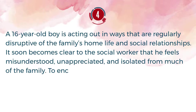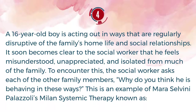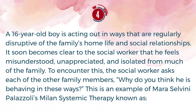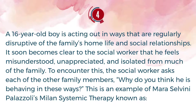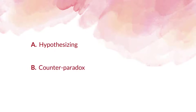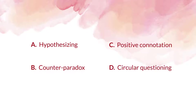Number 4. A 16-year-old boy is acting out in ways that are regularly disruptive of the family's home life and social relationships. It soon becomes clear to the social worker that he feels misunderstood, unappreciated, and isolated from much of the family. To address this, the social worker asks each of the other family members, 'Why do you think he is behaving in these ways?' This is an example of Mara Selvini-Palazzoli's Milan Systemic Therapy known as: A. Hypothesizing. B. Counter-Paradox. C. Positive Connotation. D. Circular Questioning.